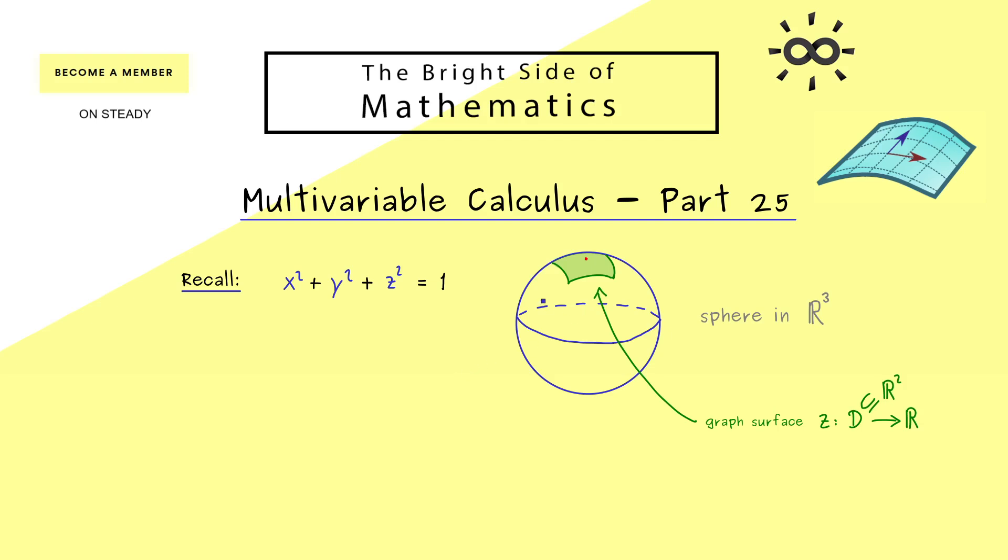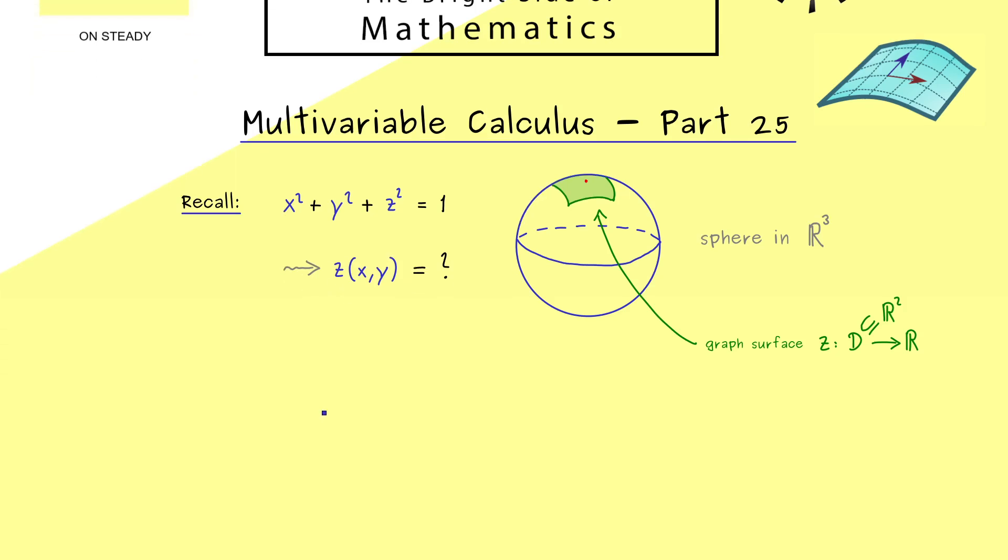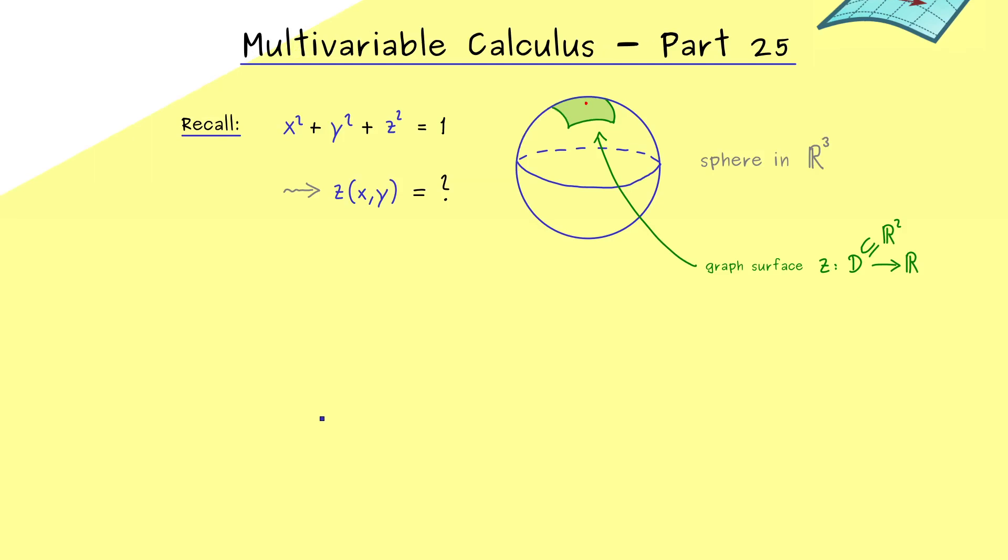Which simply means, can we rewrite one part of the sphere as a graph surface. If that works, we can say that this equation here has implicitly a function z given.